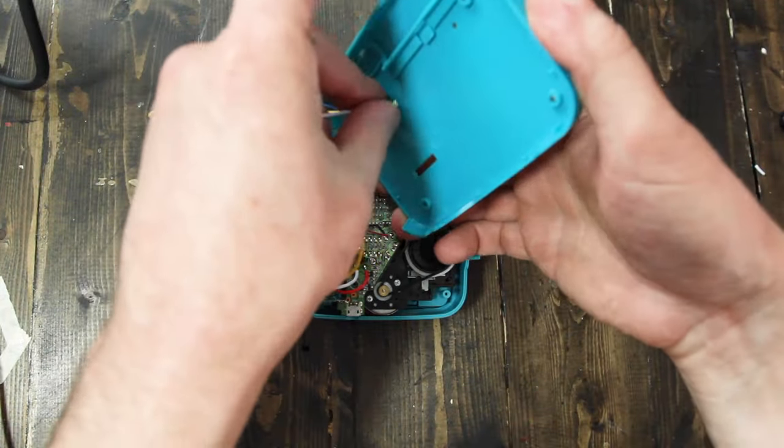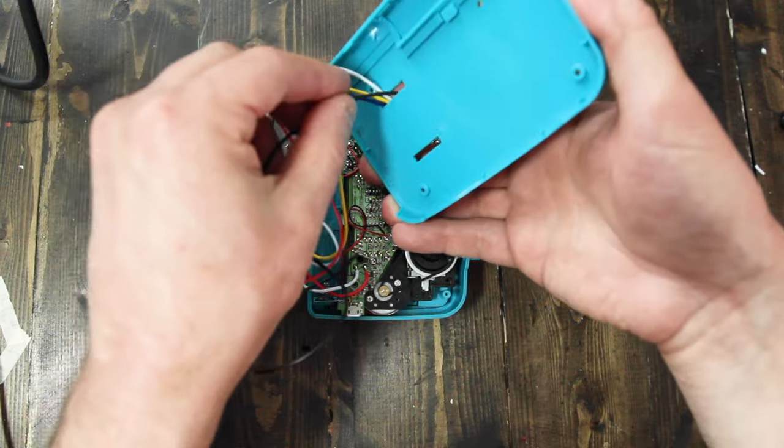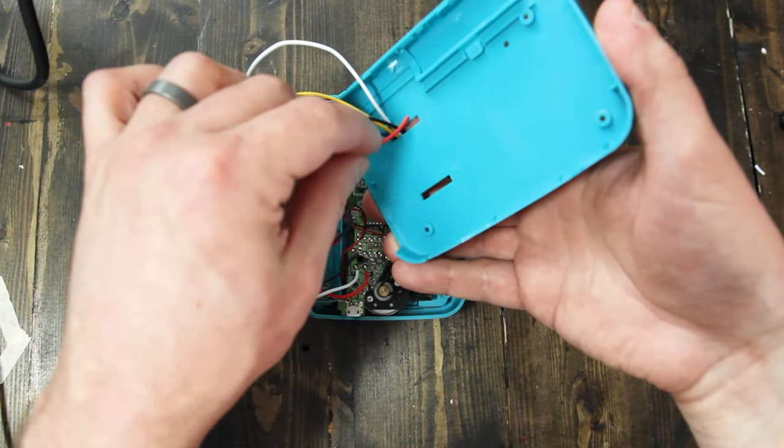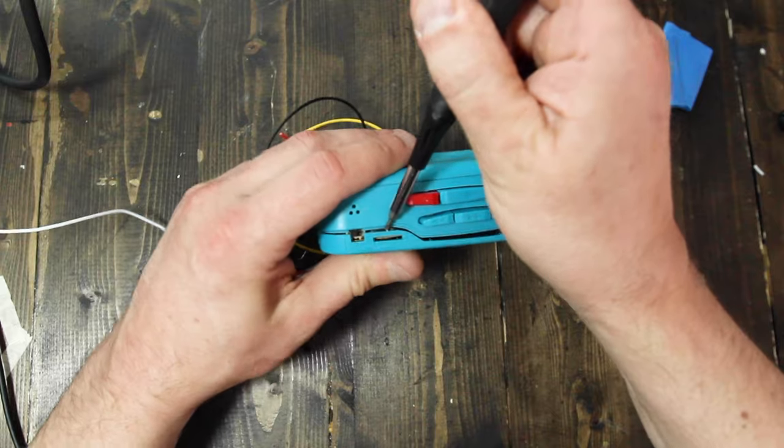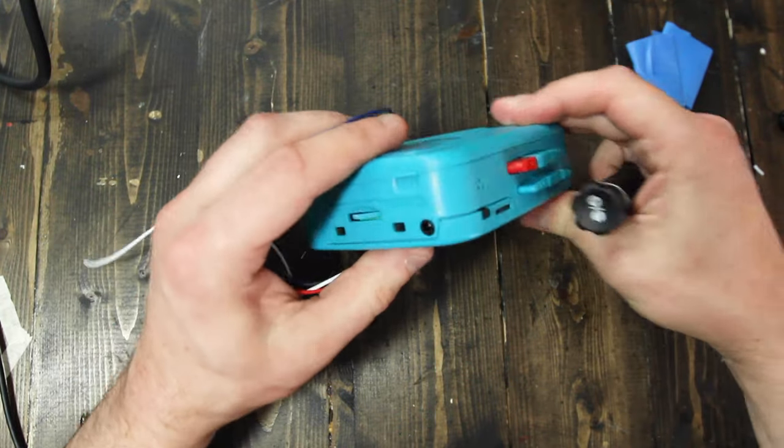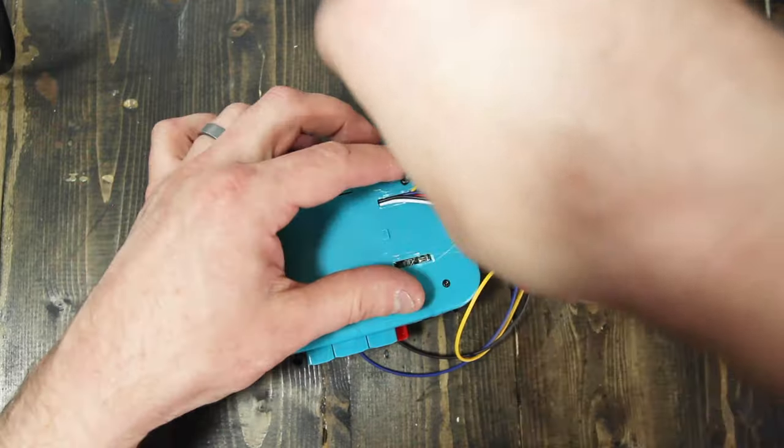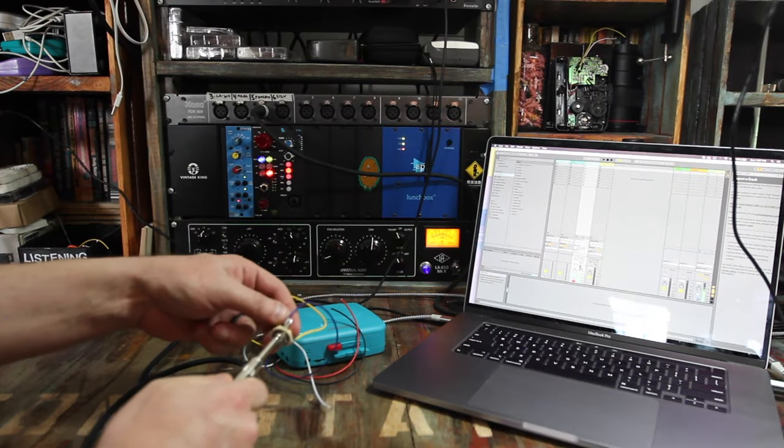Now, with everything connected, feed the wires through the hole that's left from the belt clip and re-secure the back of the case. Remember that you'll probably need to futz a bit with a volume dial in order to get it back in place. And again, you probably want to make sure that you're still getting audio out.